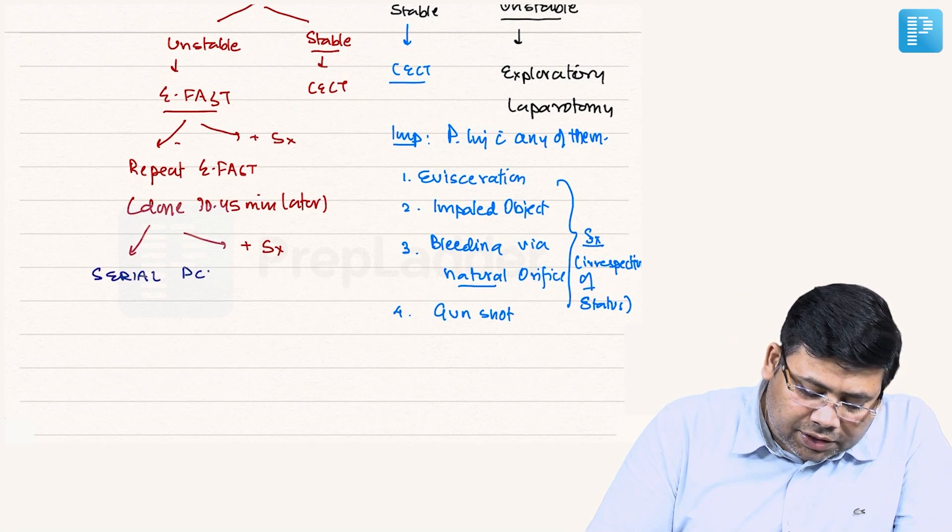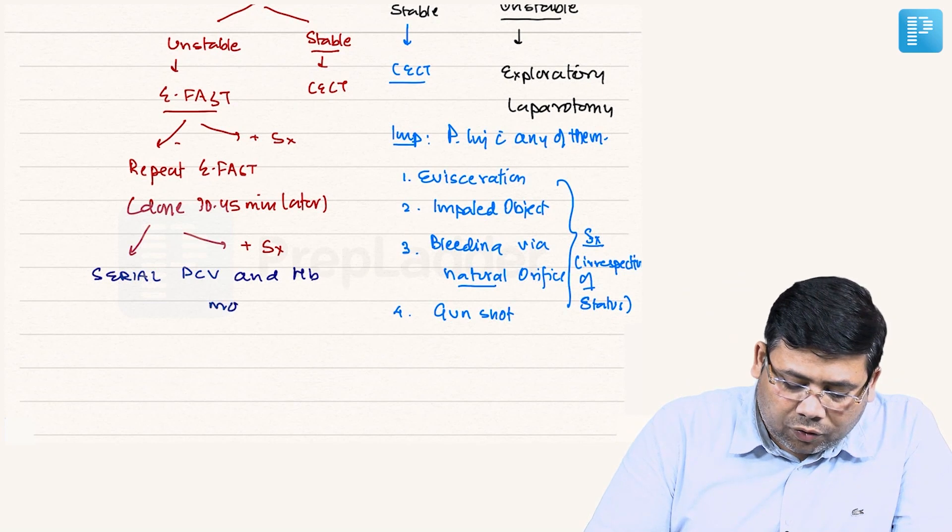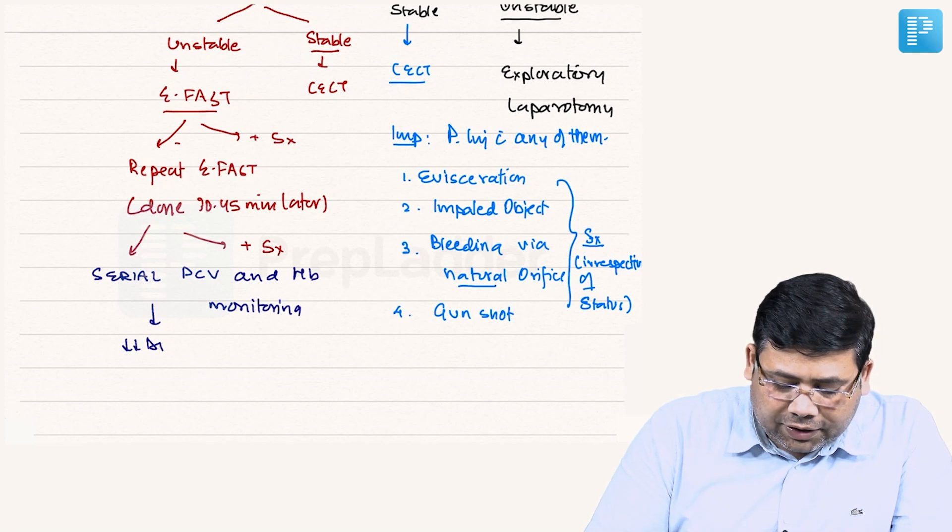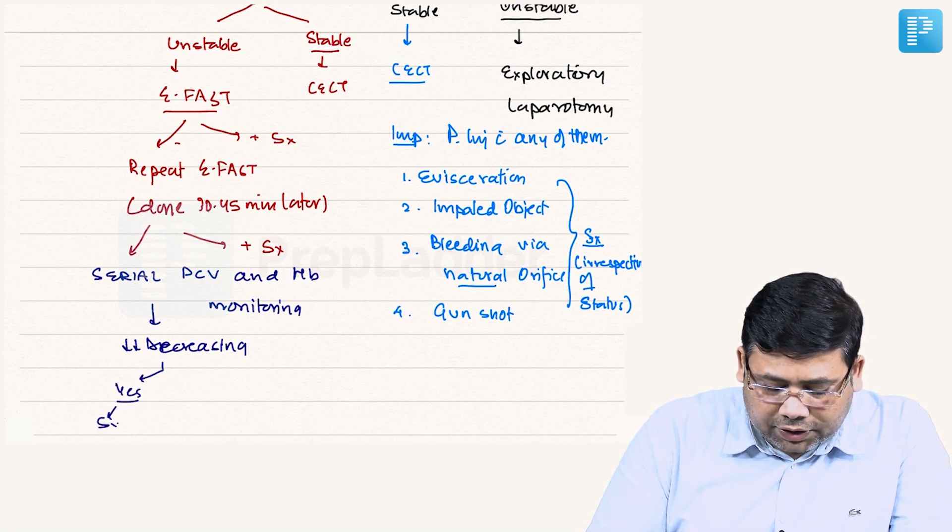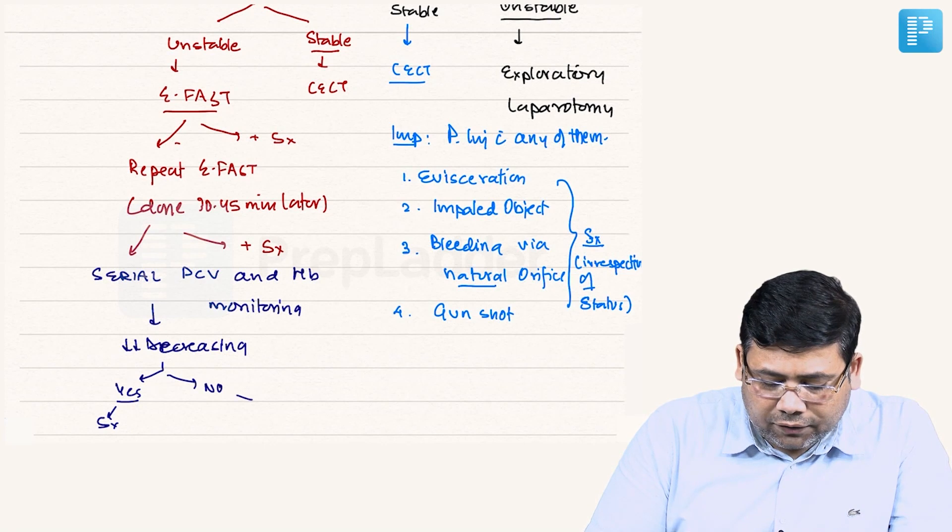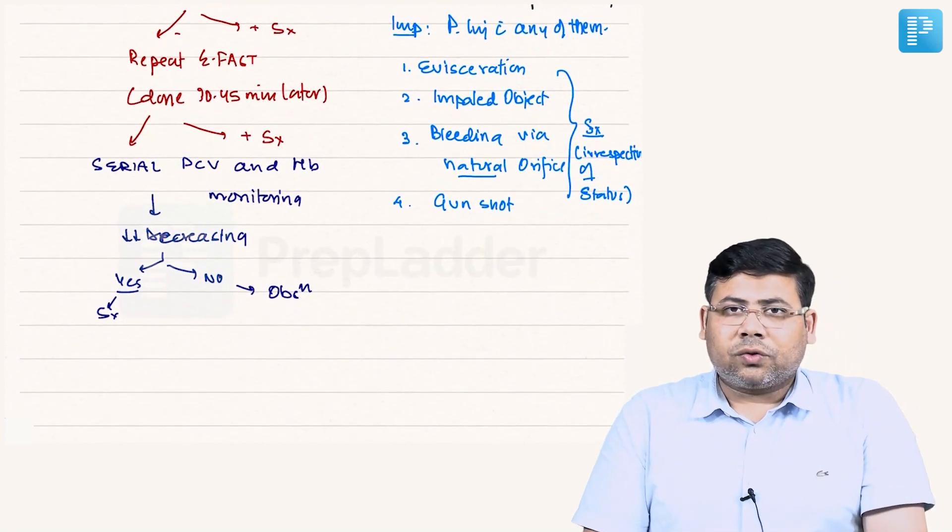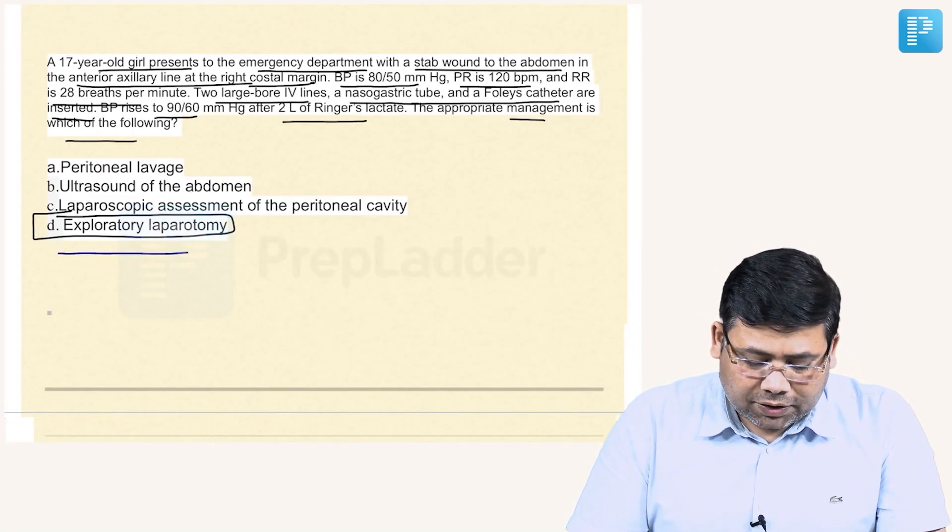So in this case, you are going to go now for serial PCV and hemoglobin monitoring. And remember, if you see a decreasing trend, if it is decreasing, that means there is an ongoing bleed. And yes, if it is decreasing, you will go for surgery. If it is not, then you will continue with the observation. This is the standard SOP of the management of abdominal trauma. So the answer for this is D.